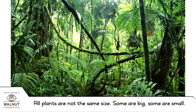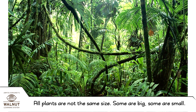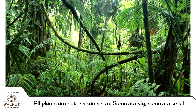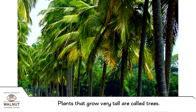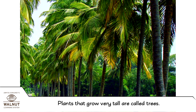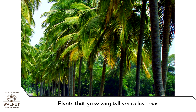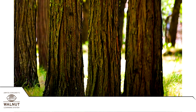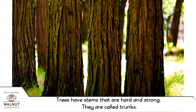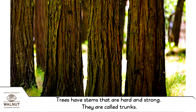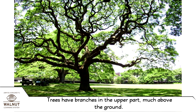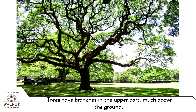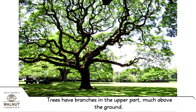All plants are not the same size — some are big, some are small. Plants that grow very tall are called trees. Trees have stems that are hard and strong, called trunks. Trees have branches in the upper part, much above the ground.